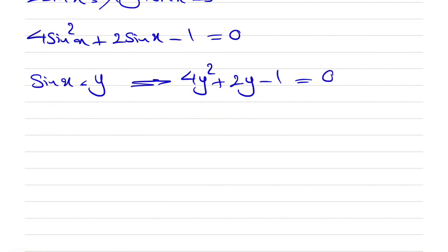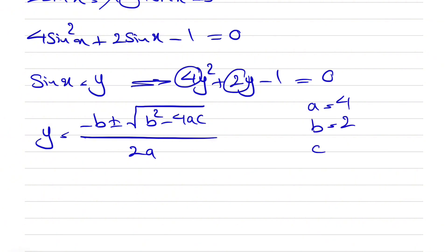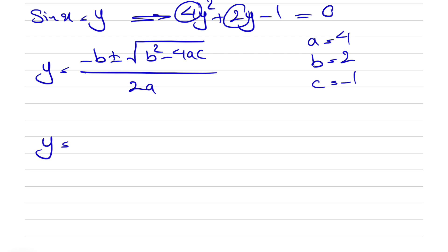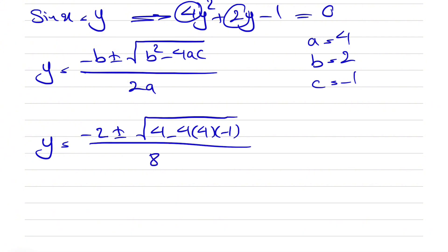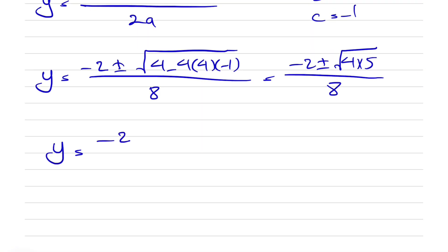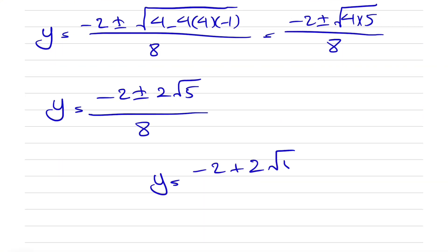We have a simple quadratic equation and we'll use the quadratic formula: y equals minus b plus or minus square root of b squared minus 4ac, all over 2a. Here a equals 4, b equals 2, and c equals minus 1. Plugging in: minus 2 plus or minus square root of 4 plus 16, which is 20, written as 4 times 5, all over 8. This simplifies to y equals minus 2 plus or minus 2 root 5, all over 8. There are two answers but only one is acceptable — that is y equals (minus 2 plus 2 root 5) divided by 8.